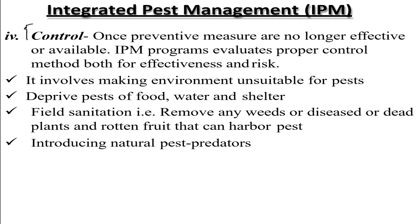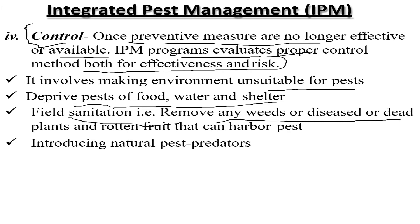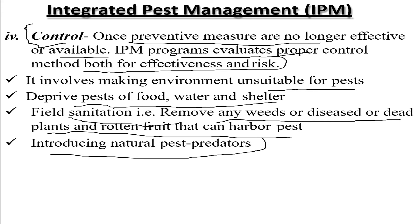The next objective is control. Once preventive measures are no longer effective or available, IPM programs evaluate proper control methods for both effectiveness and risk. This involves making the environment unsuitable for pests — depriving pests of food, water, and shelter through field sanitation, removing weeds, diseased or dead plants, and rotten food that can harbor pests. Introducing natural pest predators is also a very effective strategy for reducing pest growth.